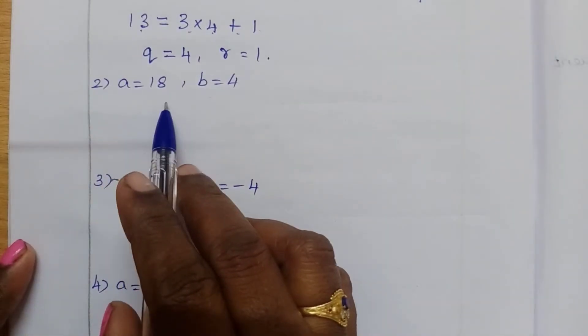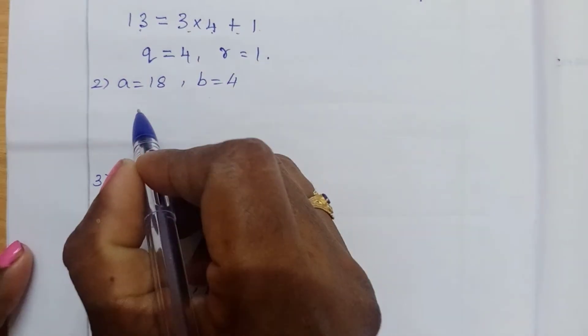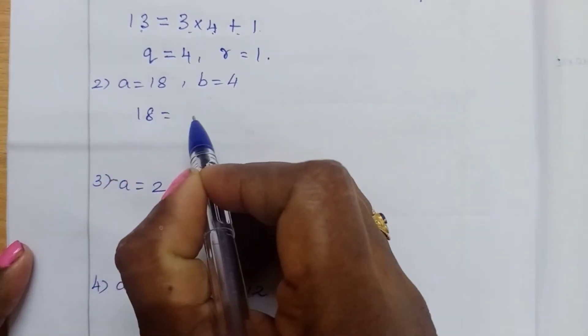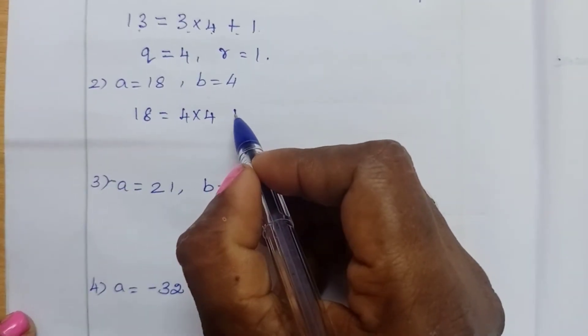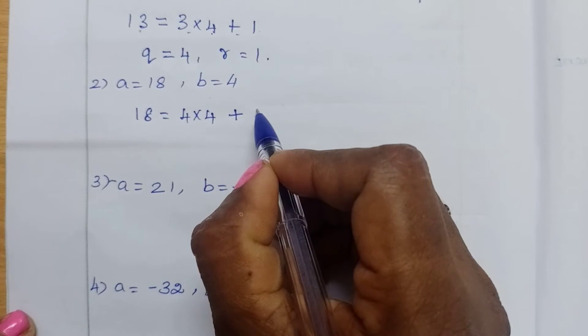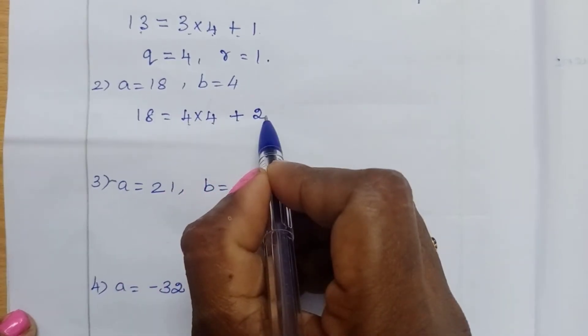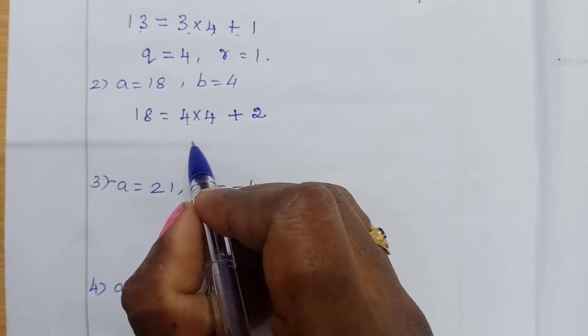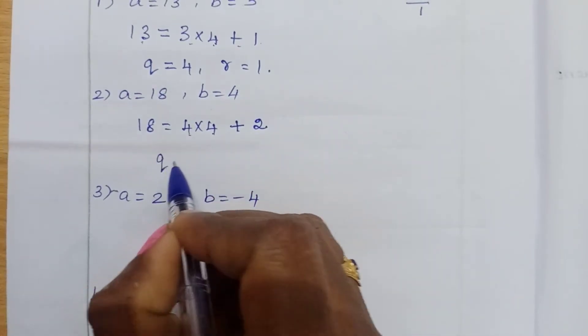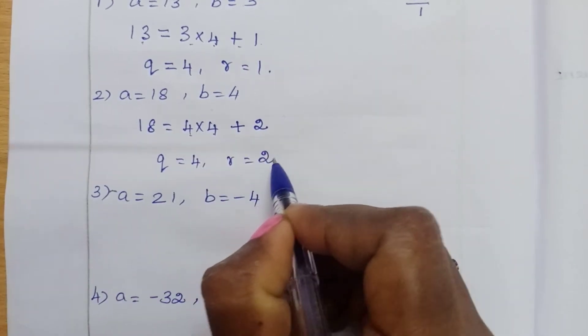Second one, A equal to 18, B equal to 4. So 18 equal to, 4 4's are 16, so therefore the reminder is equal to 2. So 4 4's are 16, 16 plus 2, 18. So therefore Q equal to 4, R equal to 2.